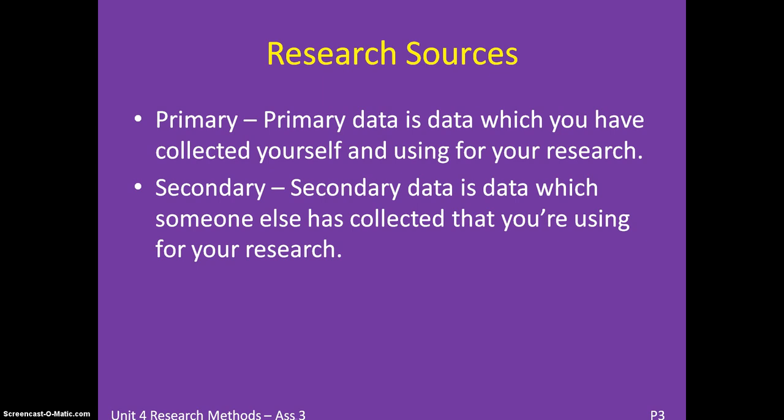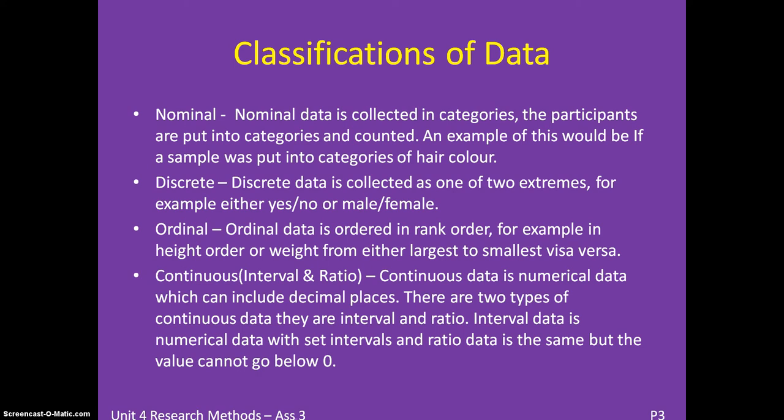There are four different types of data classification. The first is Nominal, which is collected in categories — participants are put into categories and counted. For example, a sample could be categorised by hair colour such as brown, blonde, red, or by eye colour or age. There is also Discrete data, which is collected as one of two extremes — either yes or no, male or female.